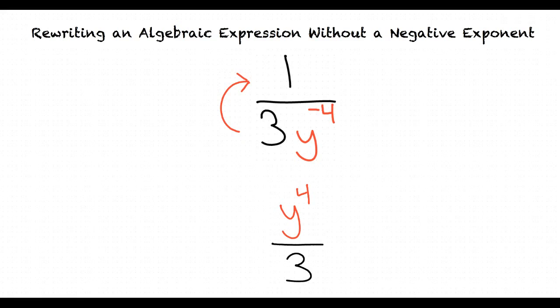So in conclusion, if we have a negative exponent in our numerator, we move the base and exponent to the denominator in order to make it a positive exponent. On the other hand, if we have a negative exponent in the denominator, then we move our base and exponent to the numerator in order to make it a positive exponent. Great job! It seems like you have an understanding on how to write an algebraic expression without a negative exponent.